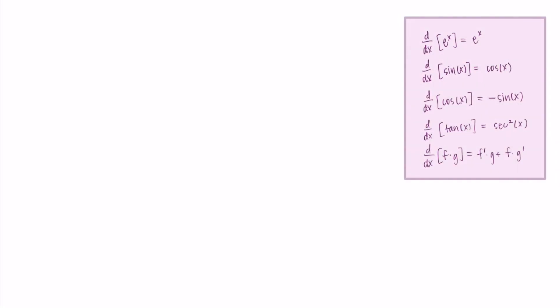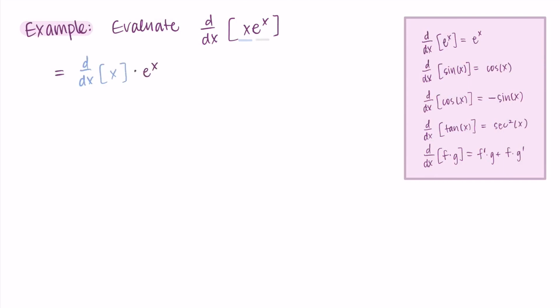Let's jump into an example. I'm going to keep some derivative rules here on the side to help us as we work through. Let's evaluate the derivative with respect to x of x times eˣ. One way to know that you should use the product rule is if, when you read it out loud, you literally have to say 'multiplying' or 'times.' So when I read it, I think of x times eˣ and I go, 'oh yeah, product rule — there are two things happening here.' So when we write this out using the product rule, I say the derivative of x times eˣ plus x times the derivative of eˣ, and then we simplify by finding each of these derivatives.